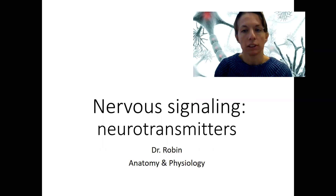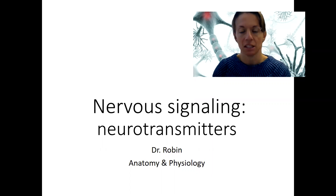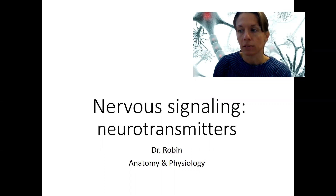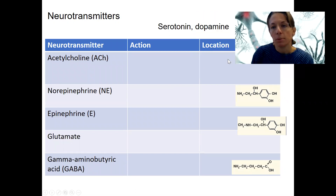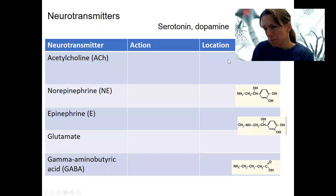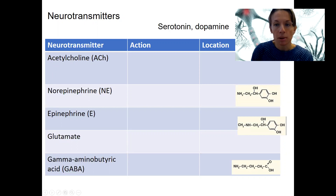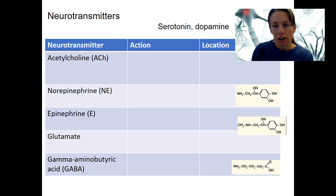Neurotransmitters are chemical messengers released from neurons. They bind to receptors on the other cell being communicated with and have some effect. This video will focus on neurotransmitters themselves. You may have heard of serotonin or dopamine — those are two we won't cover here — but here are five other examples that we'll be focusing on this semester, particularly those that come up with the autonomic nervous system.